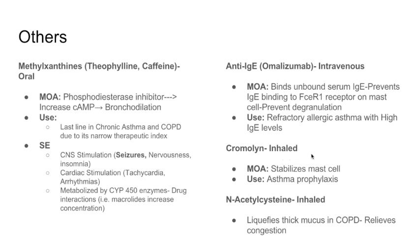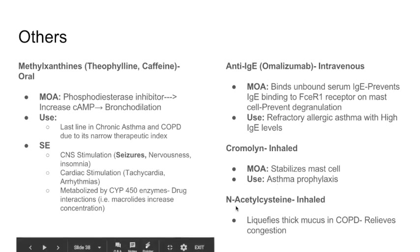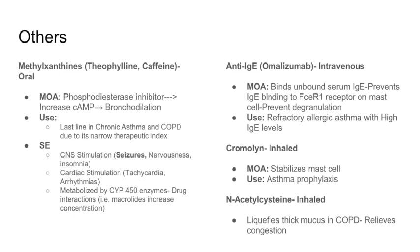Cromolyn is an inhaled medication that stabilizes mast cells, preventing them from degranulating. It's used for asthma prophylaxis. Lastly, N-acetylcysteine is an inhaled medication mainly used in COPD to liquefy thick mucus, relieving congestion for symptomatic relief. Remember that N-acetylcysteine is also used intravenously in Tylenol overdose because it repletes glutathione stores.